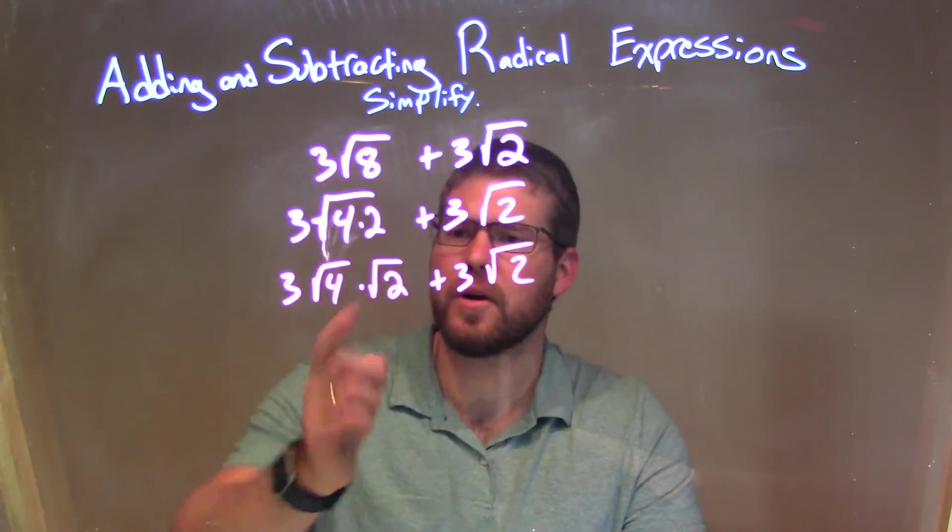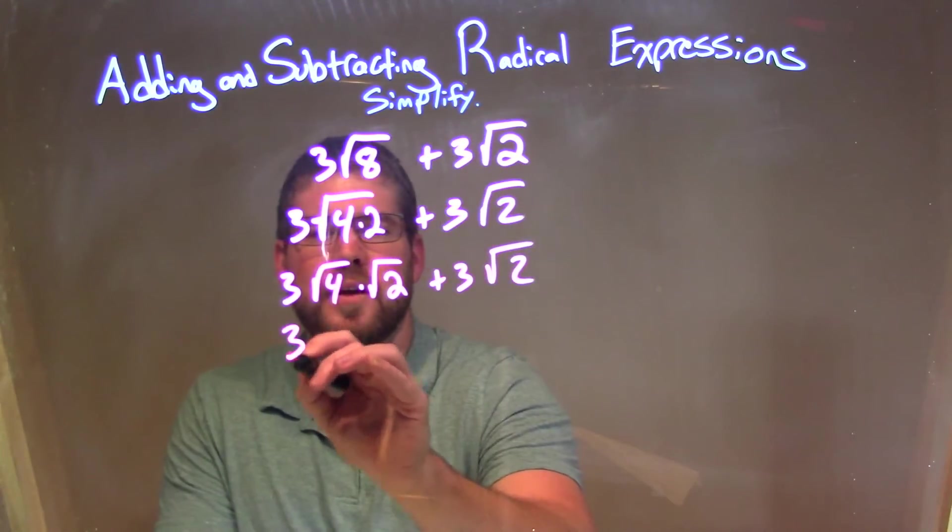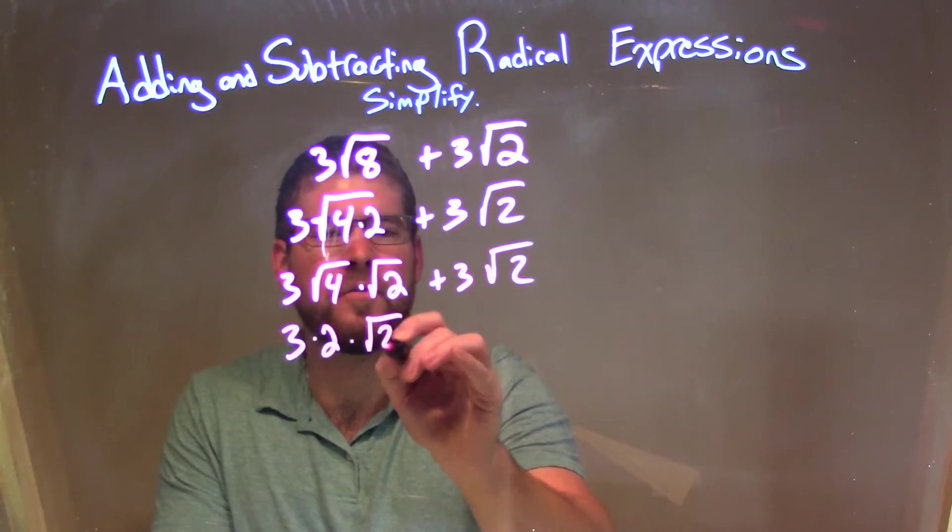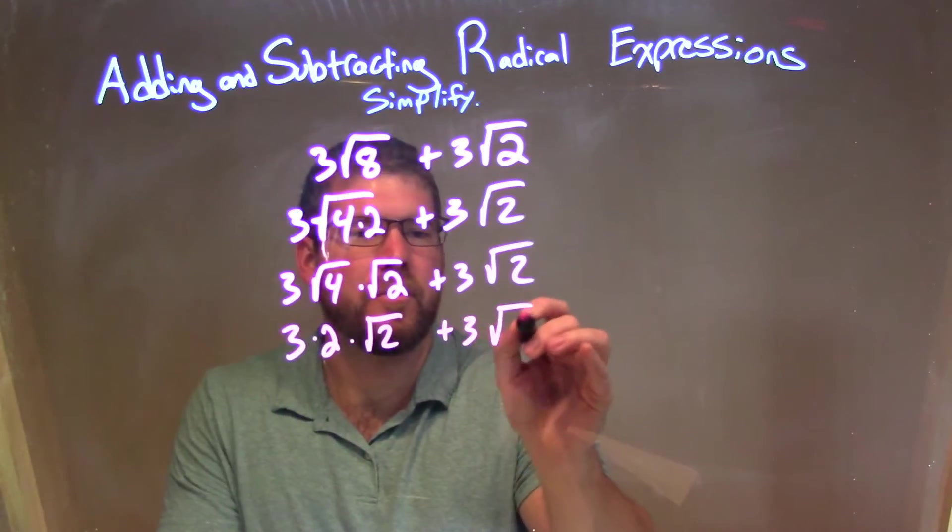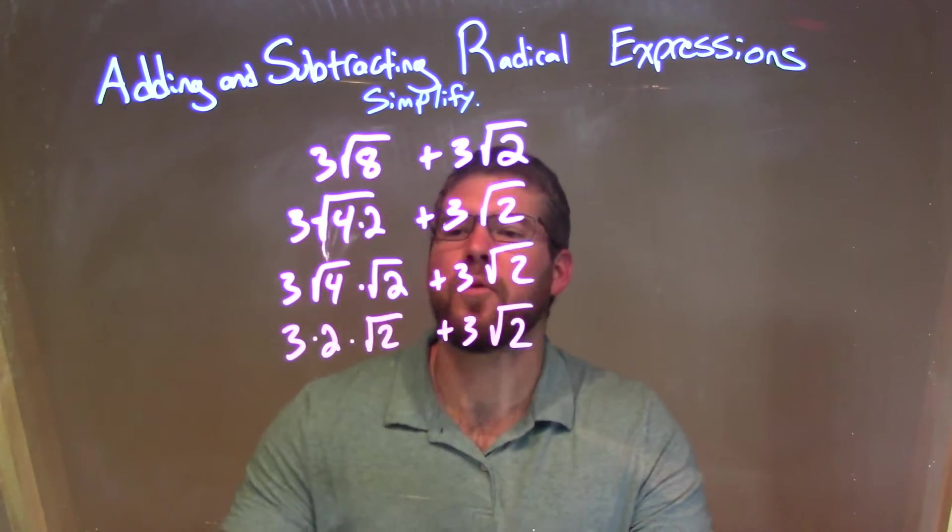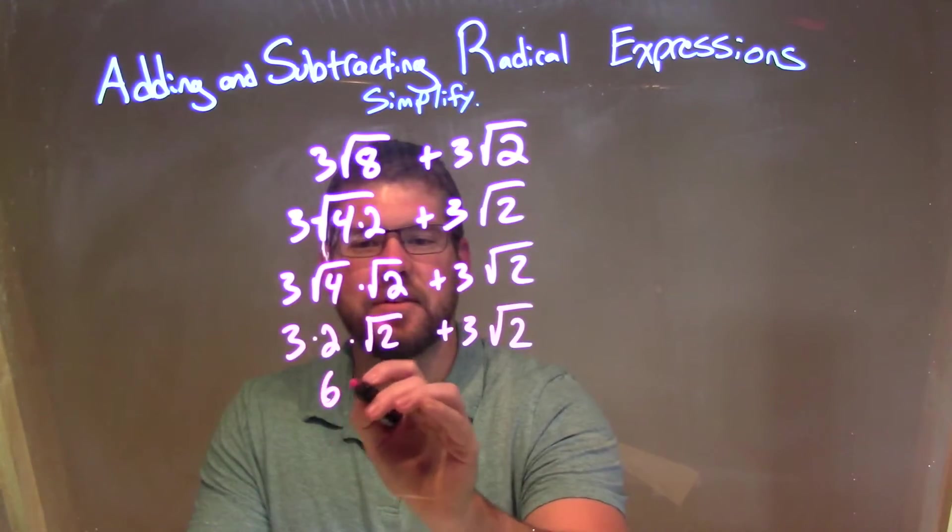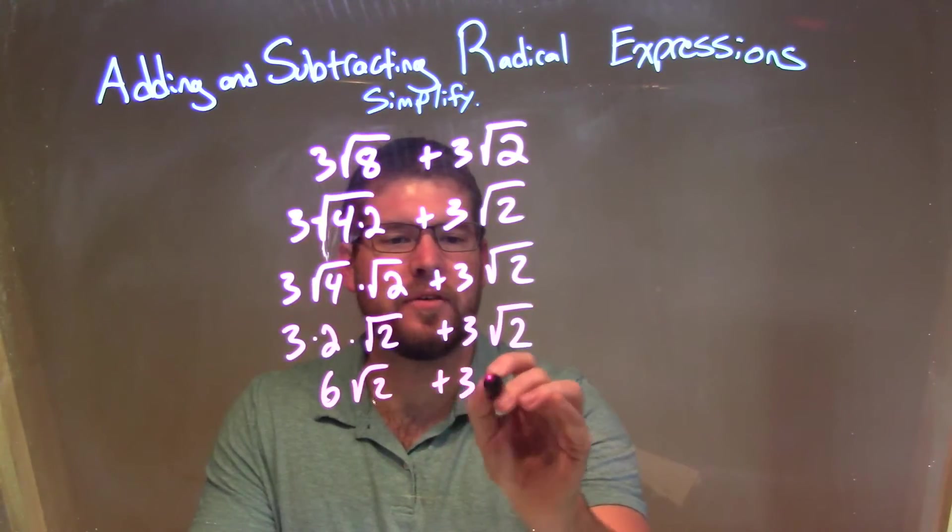Well, that's nice here. Square root of 4 I know is just 2. So we have 3 times 2 times the square root of 2 plus 3 times the square root of 2. 3 times 2 simplifies to be a 6. So it's 6 square root of 2 plus 3 square root of 2.